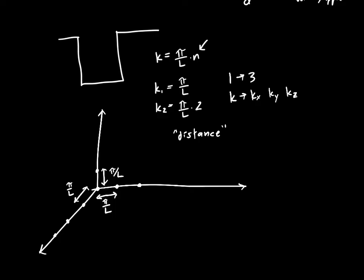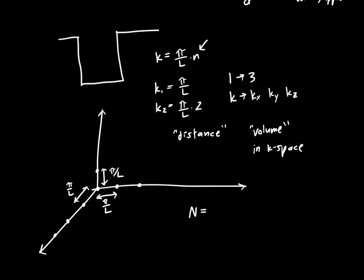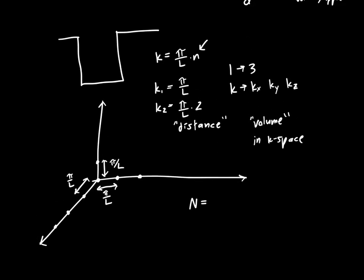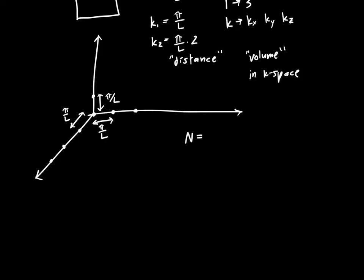So if we want the total number of states in a volume, volume in K space, then we can just say, well, the total number of states, we know the formula for a spherical shell. If we so choose to use, if we chose to use a spherical shell, which we will. And the reason for that will become obvious in a minute.